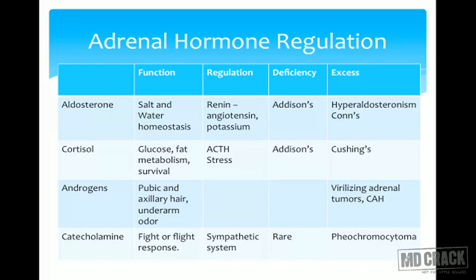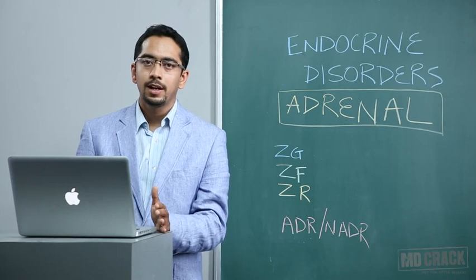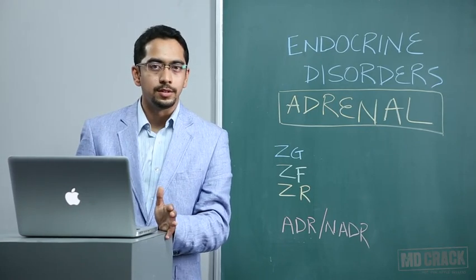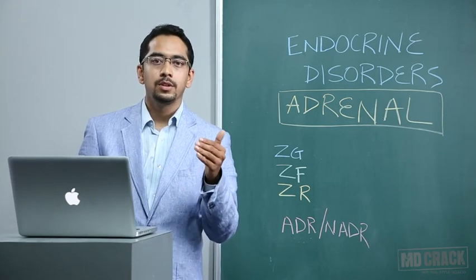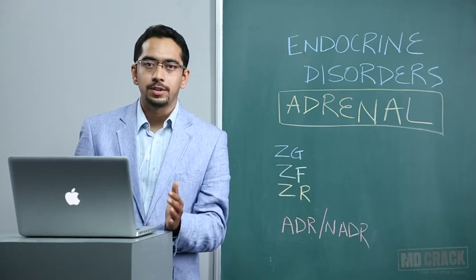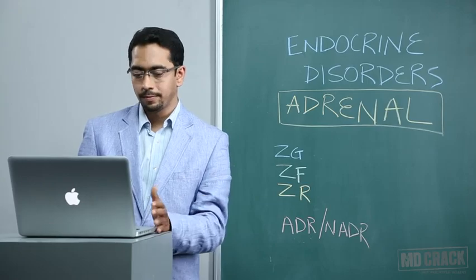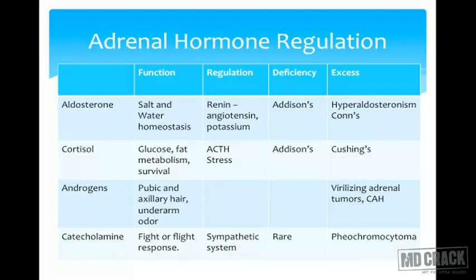Adrenal androgens are weak androgens, but if produced in excess they can cause virilization or a male-like pattern of hair, seen in adrenal virilizing tumors or congenital adrenal hyperplasia. The pubic and axillary hair that appear during puberty and underarm odor are due to adrenal androgens. As age increases, adrenal androgens decrease in concentration, so the underarm odor disappears. Catecholamines are responsible for the fight-and-flight response, under control of the sympathetic system. Their deficiency is rare, and excess catecholamine secretion is seen in pheochromocytoma.